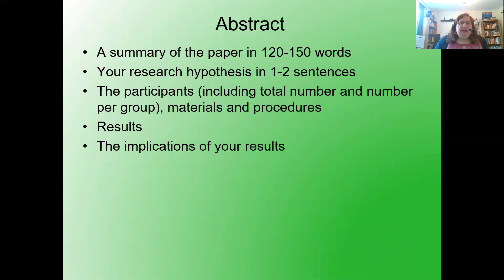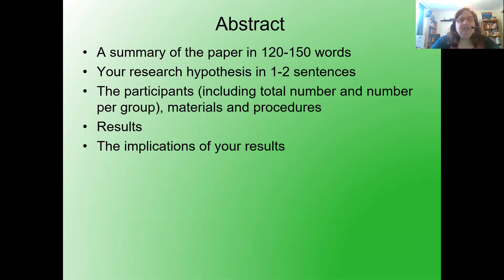The abstract is a summary of the paper in just 120 to 150 words. Include your research hypothesis in one to two sentences, the participants including total number and number per group, materials and procedures, and results. Remember, your results are simply going to be a single sentence stating how the results came out — and remember, they came out exactly the way you predicted. Also include the implications of these results.